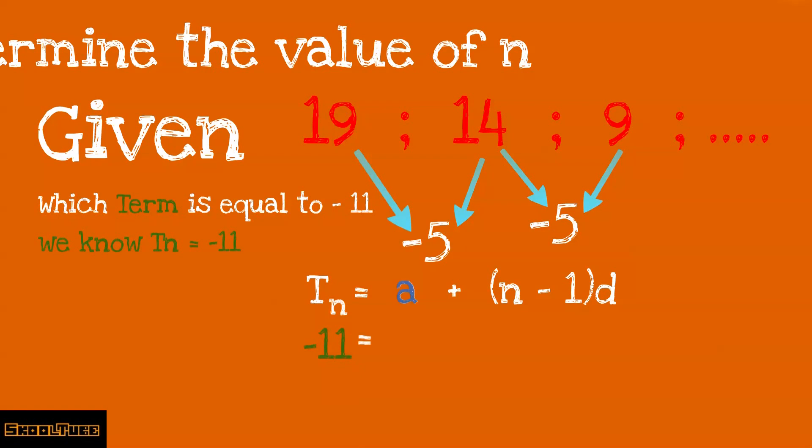And this equals a, our first term, which is 19, plus (n minus 1)d, the common difference, which is minus 5.